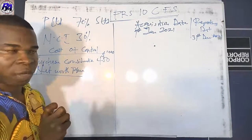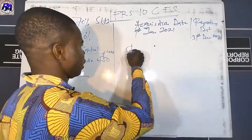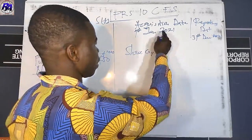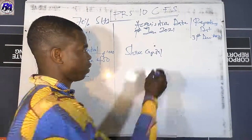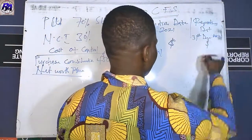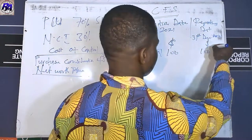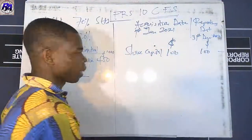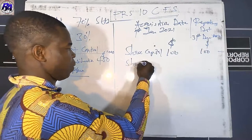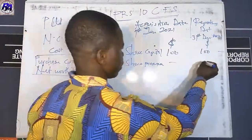Alternatively, you can bring the items line by line: share capital at acquisition date of 100 × 70%, plus retained earnings at acquisition date of 50 × 70%. Both methods give the same result of 105, producing goodwill of 345. If NCI were valued at fair value, you would add the NCI fair value and take 100% of net assets instead.